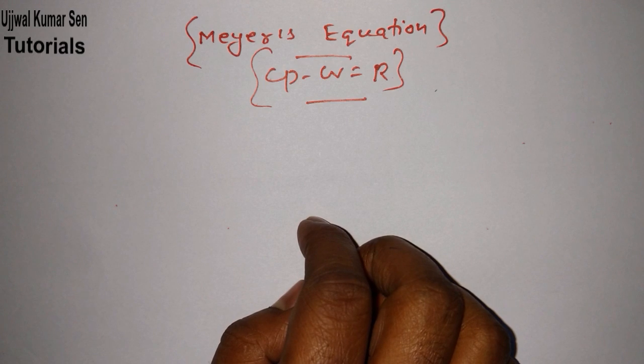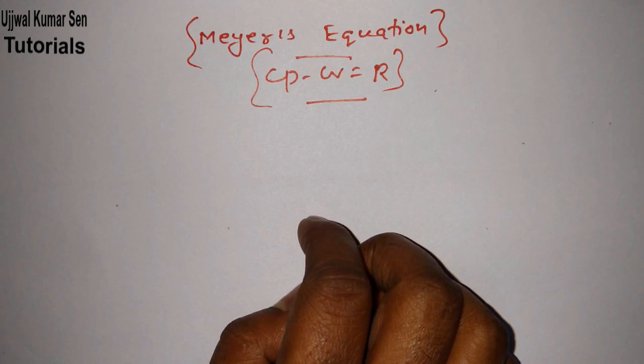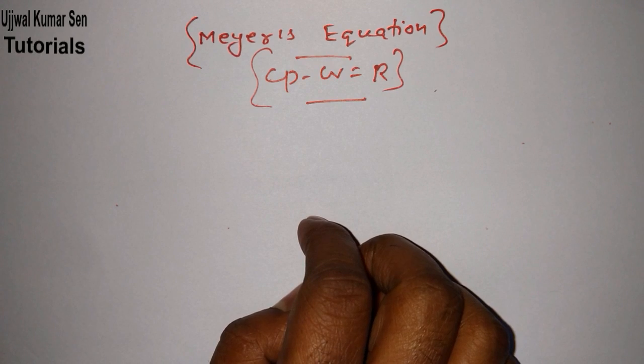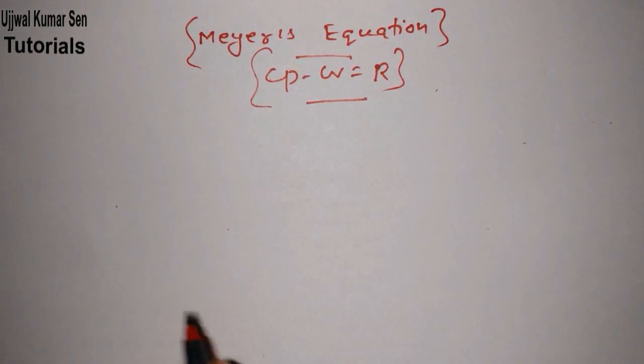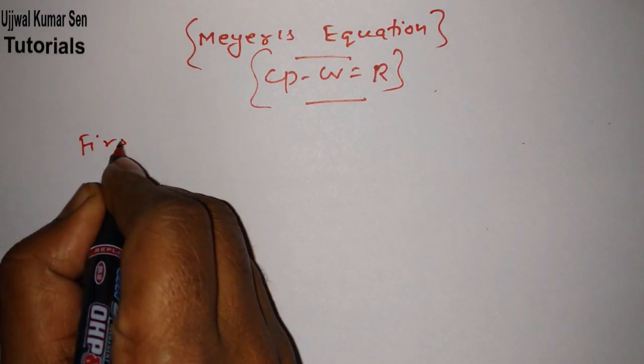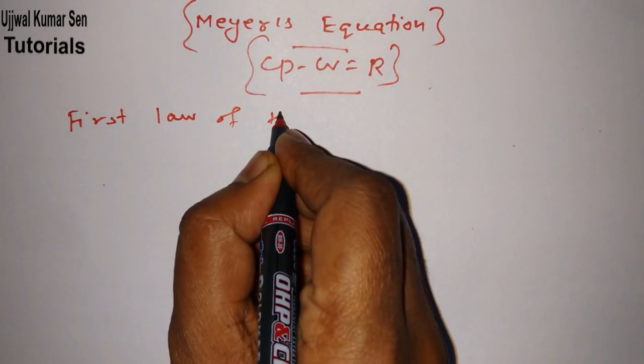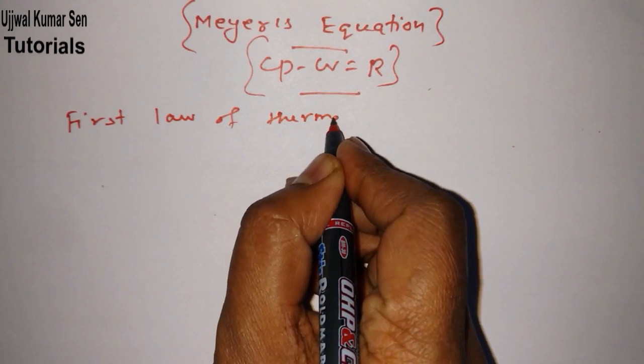How to get Cp minus Cv is equal to R. How you can find out this equation. For this we have to go to first law of thermodynamics.